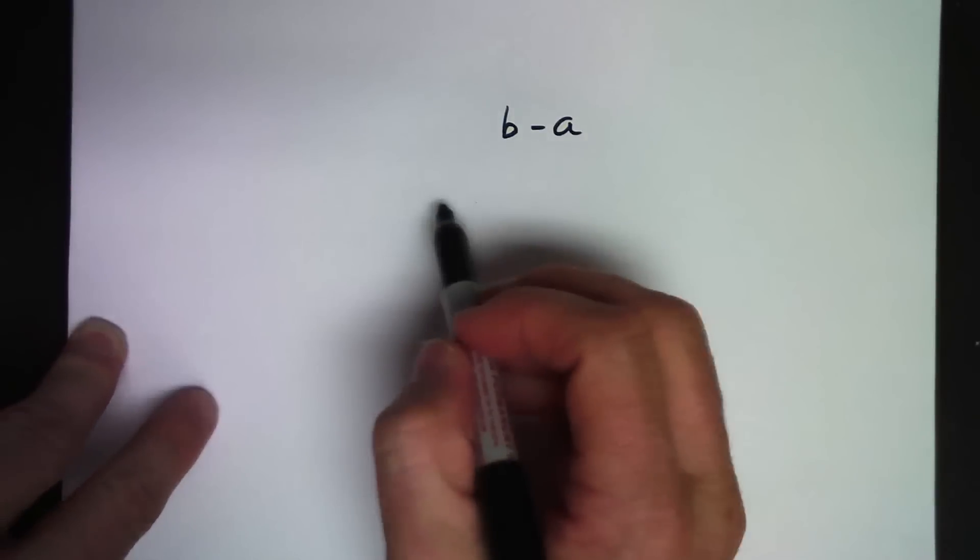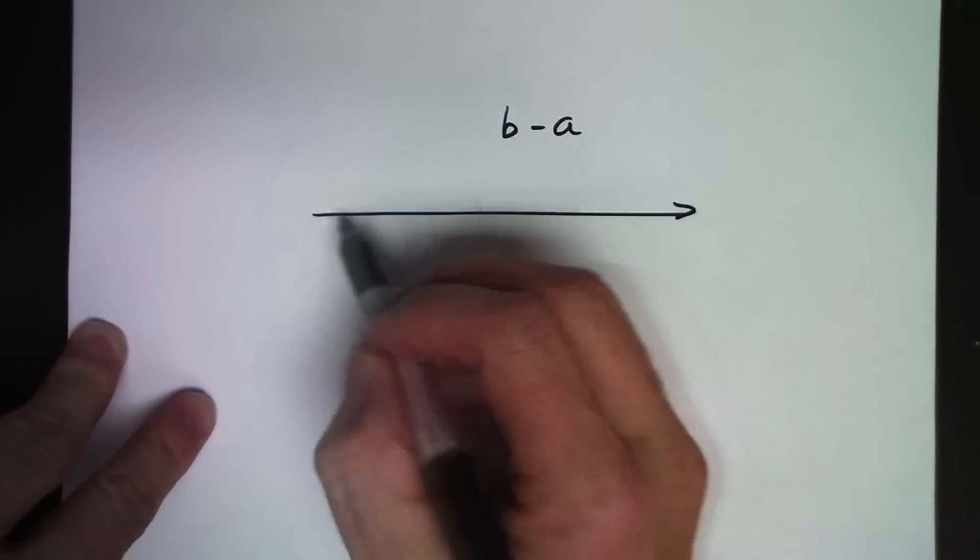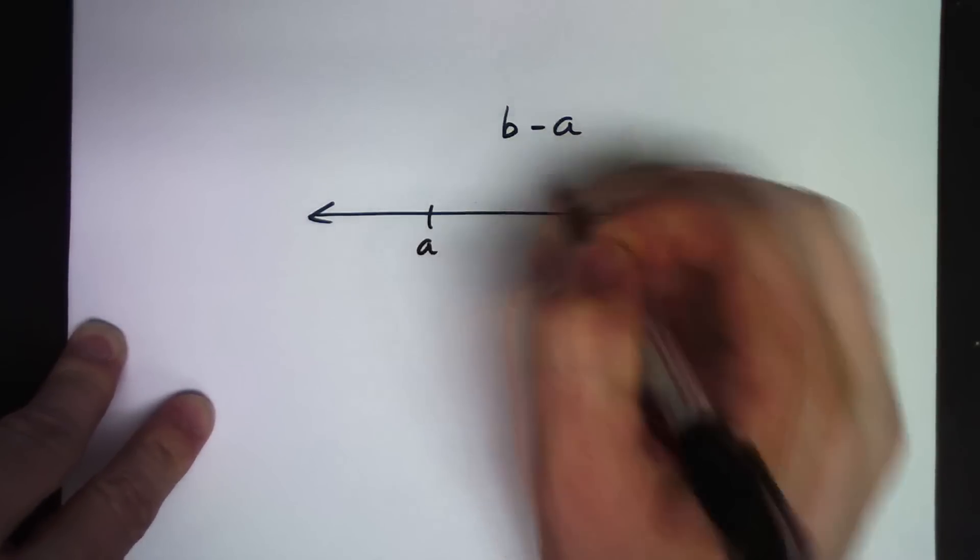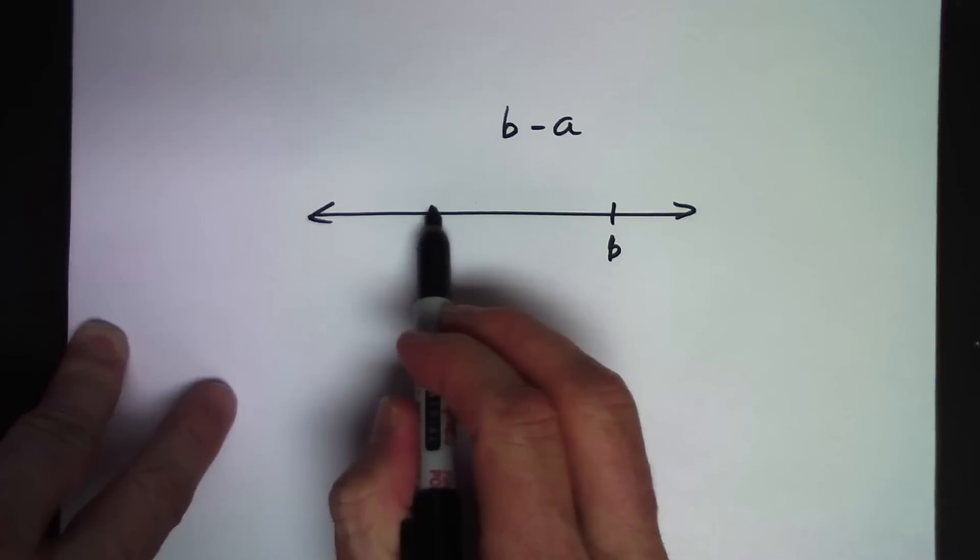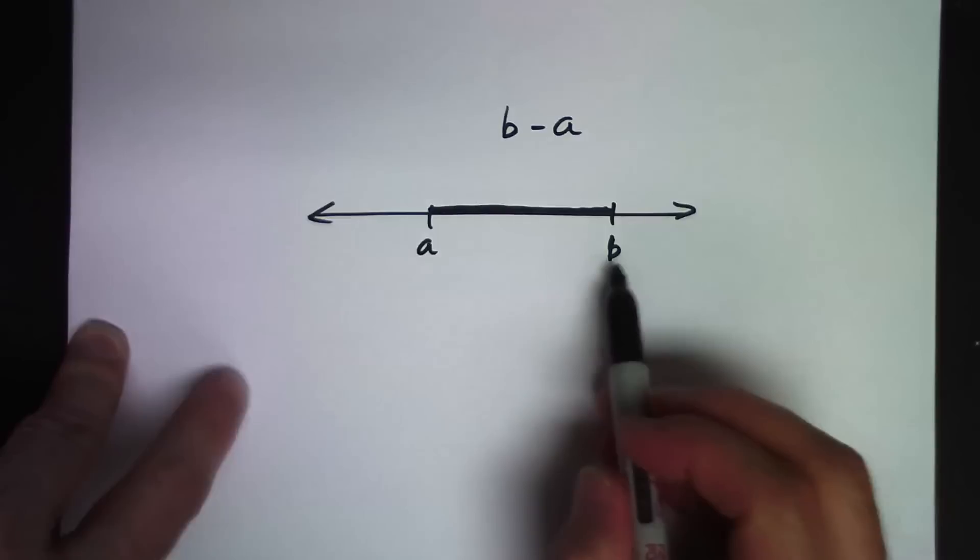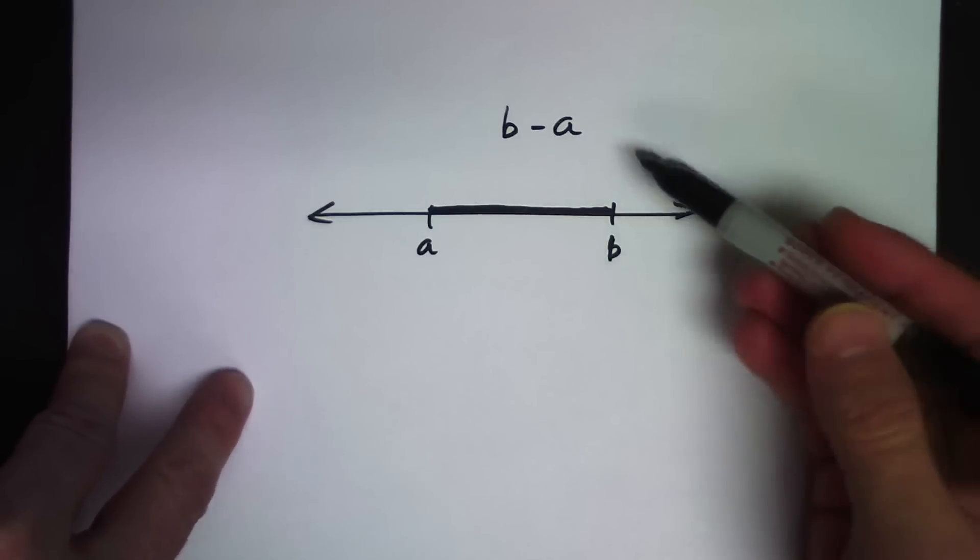Well, if we look at the numbers on our number line, B is sitting somewhere up here and A is sitting somewhere here. And B minus A is the distance between B and A on a number line, which is a good representation of the difference B minus A.